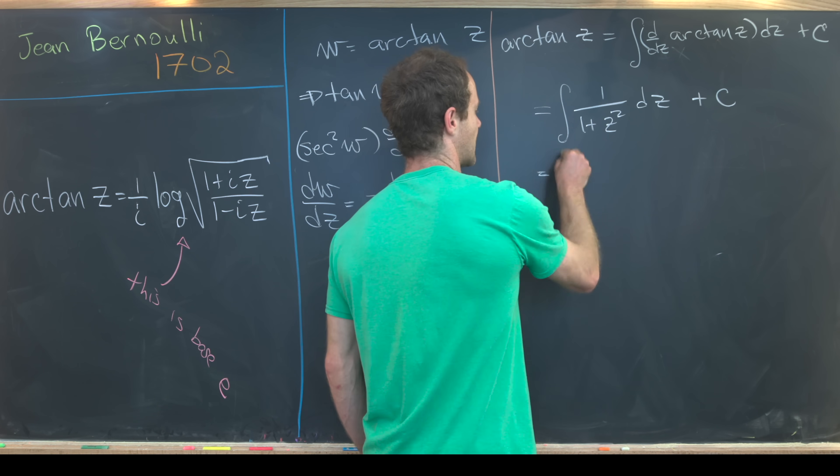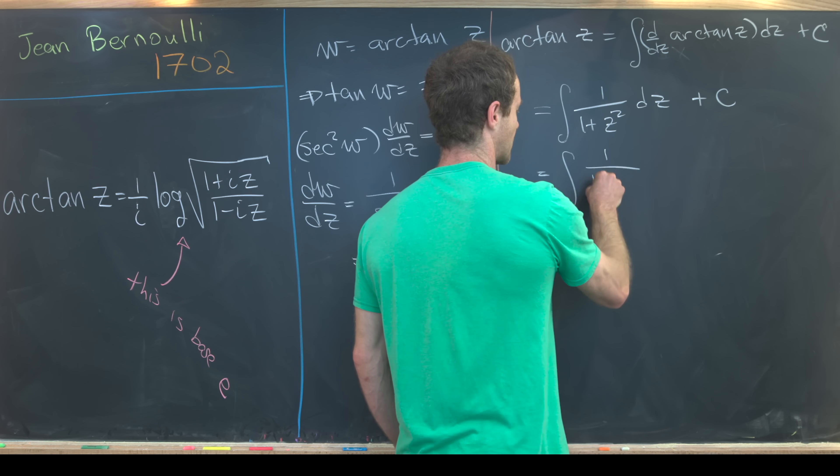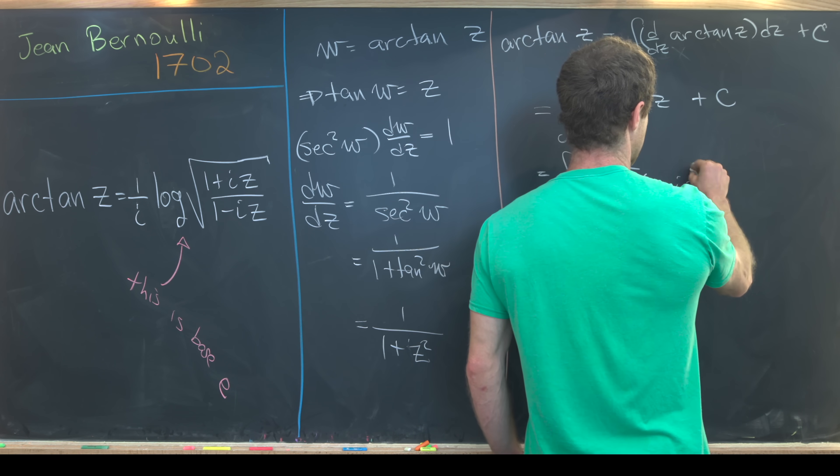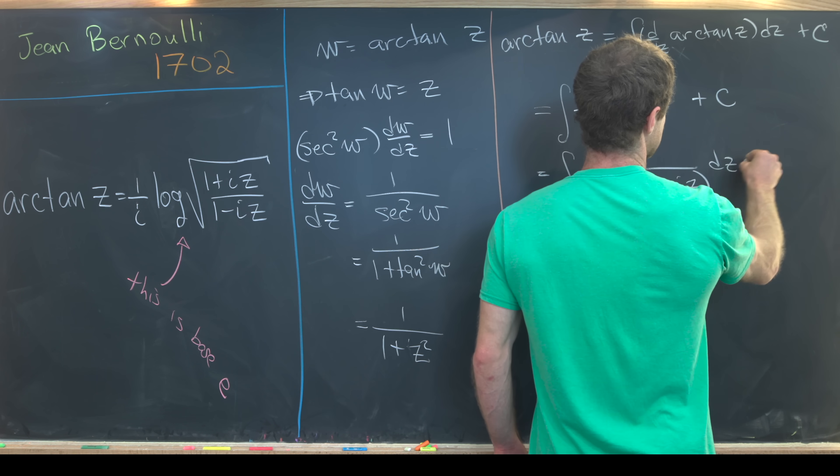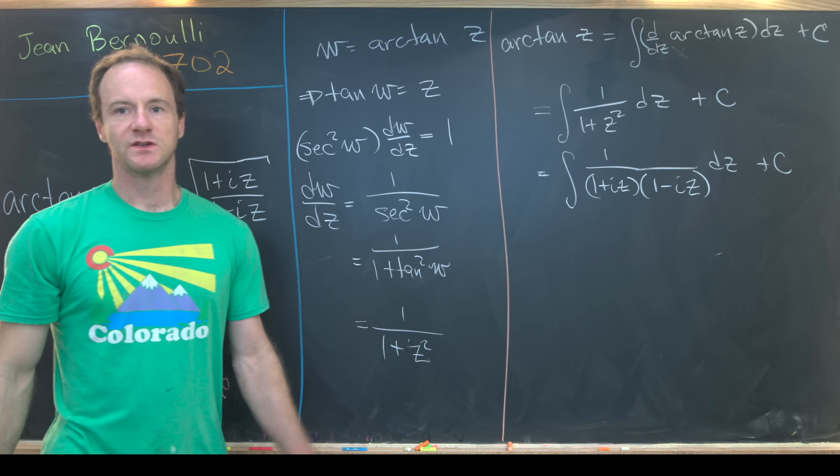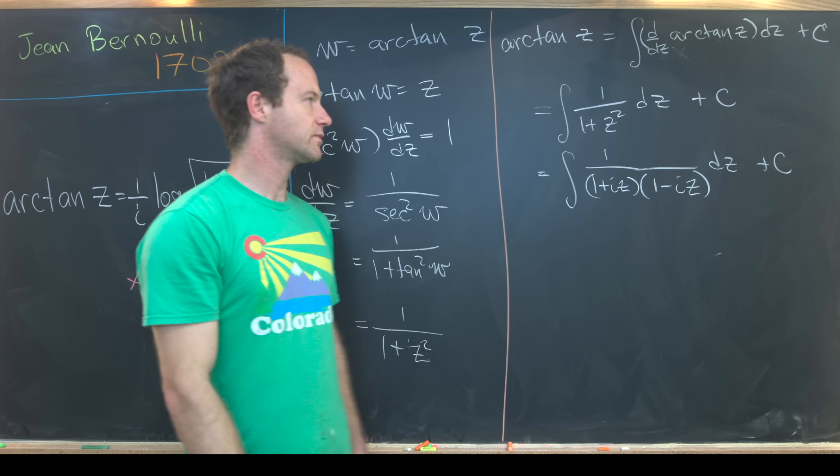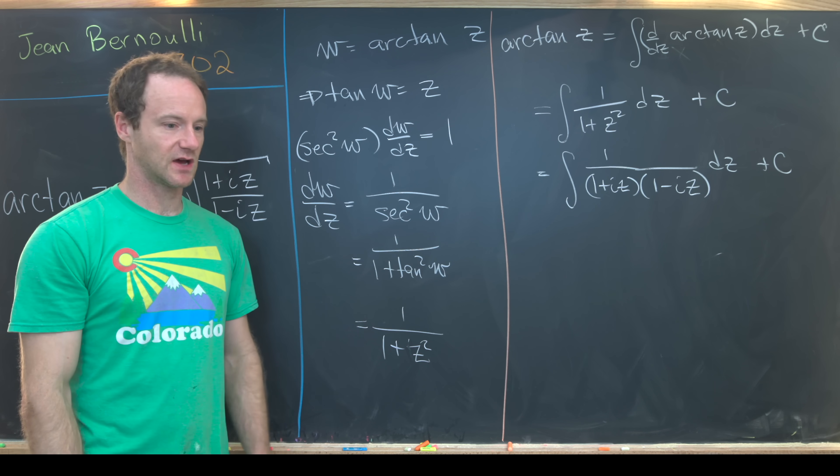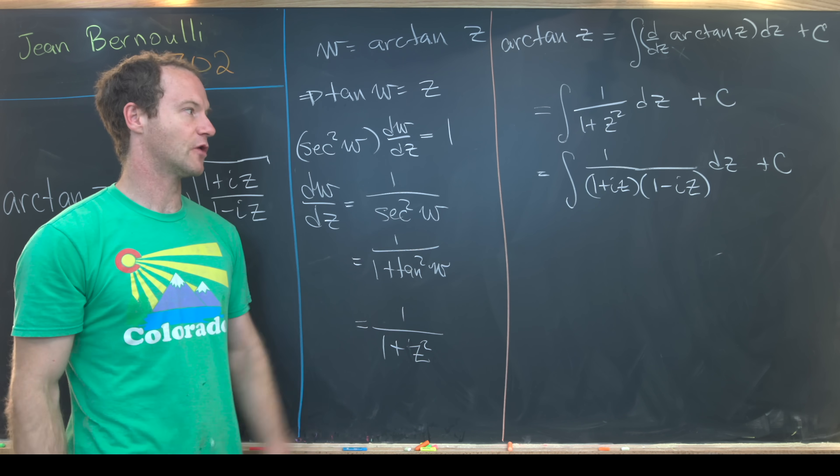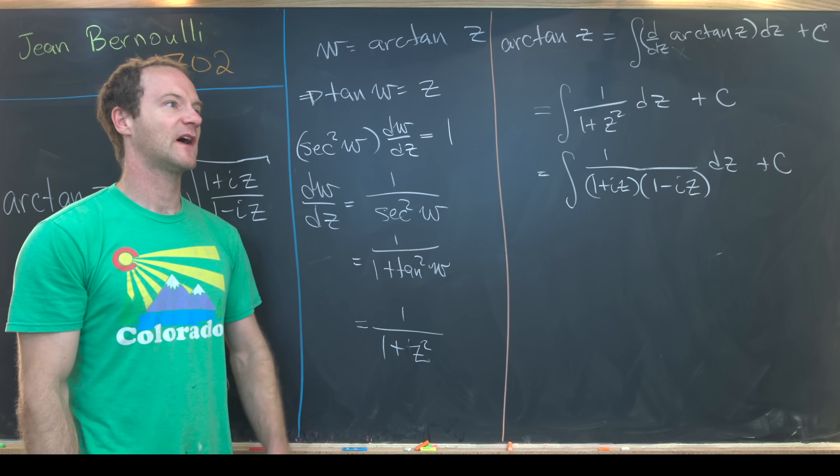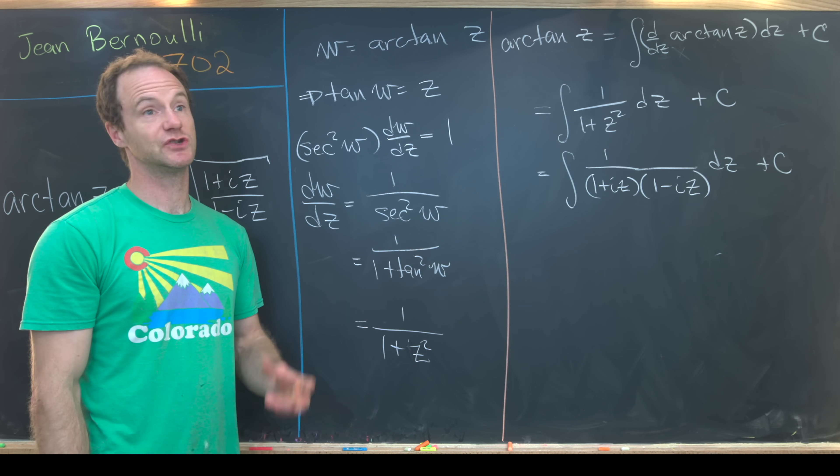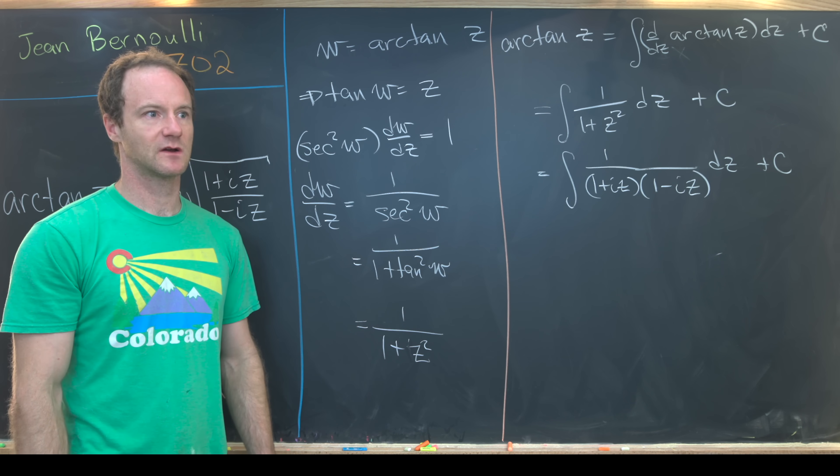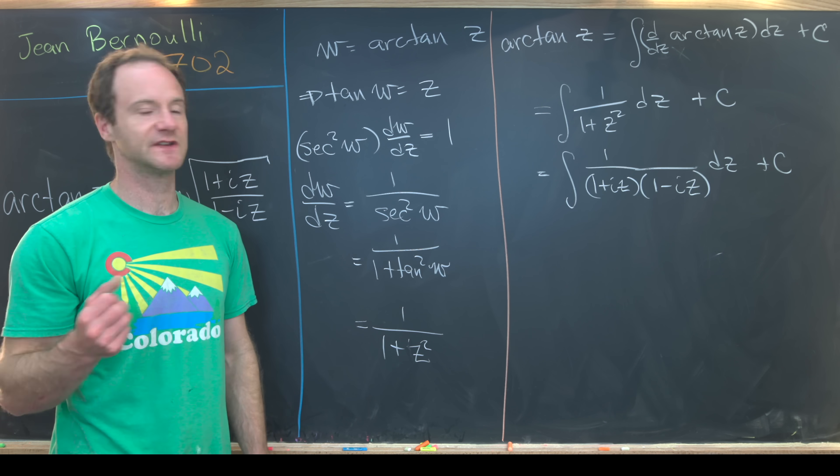Next I can rewrite this as one over (one plus iz) times (one minus iz) dz plus a constant. Generally, one plus z squared, if you're in the real numbers, will not factor because that's an irreducible quadratic. But over complex numbers, this factors nicely. In fact, all polynomials factor into linear factors over the complex numbers. That's because the complex numbers form something called an algebraically closed field.